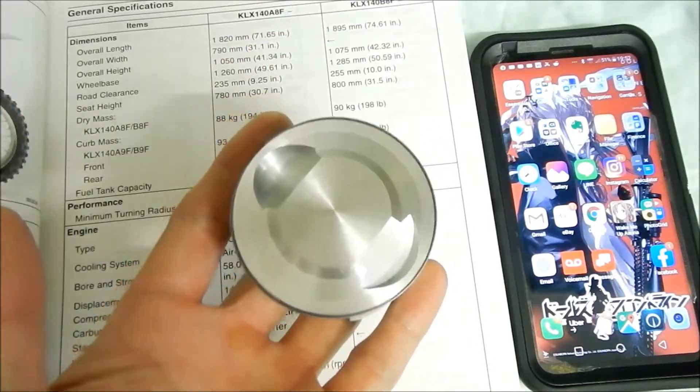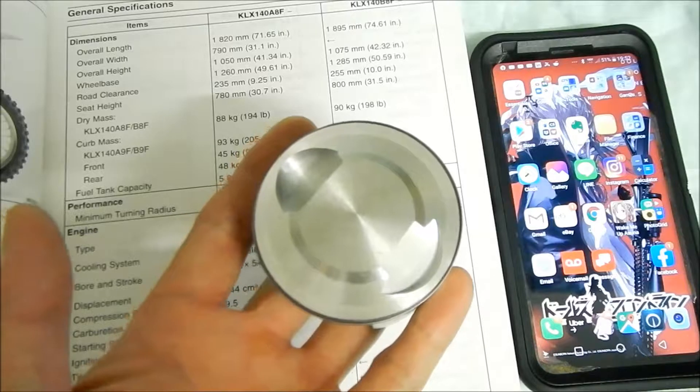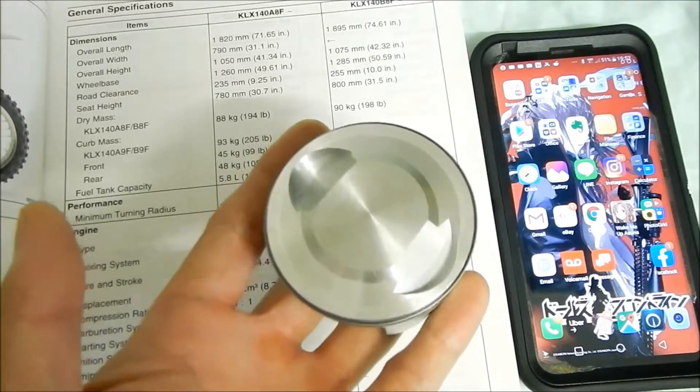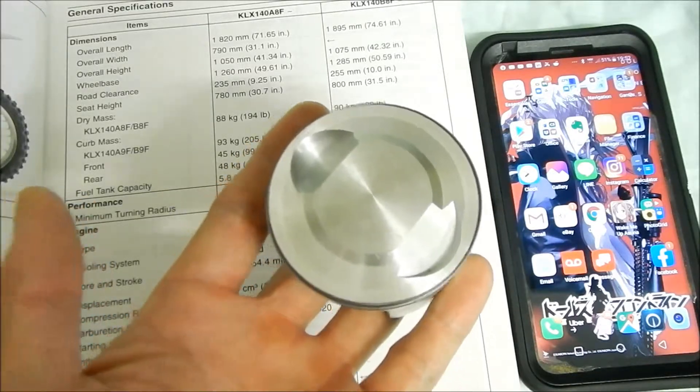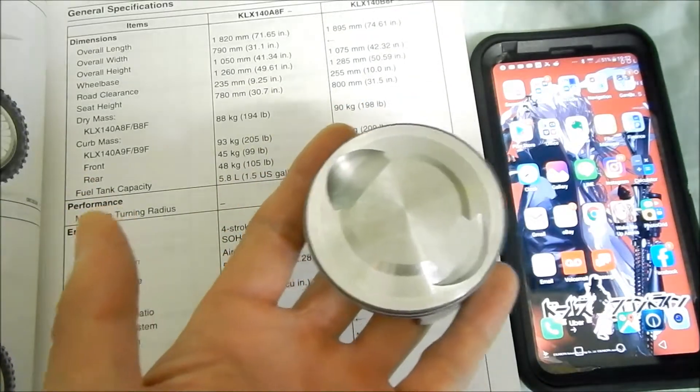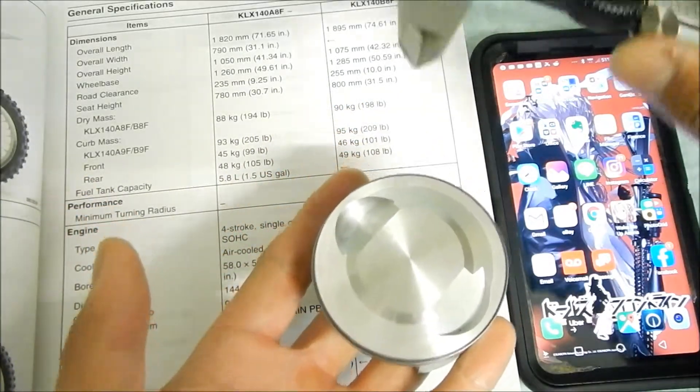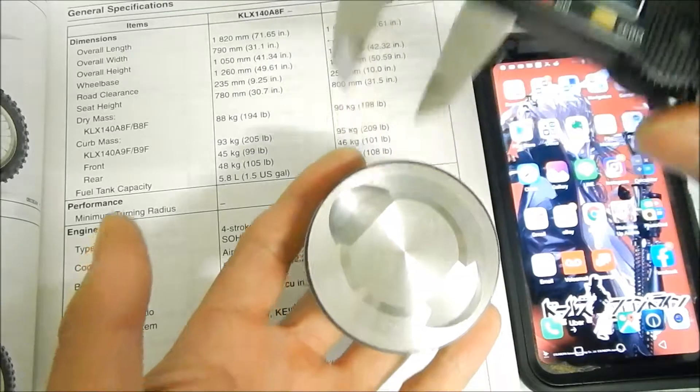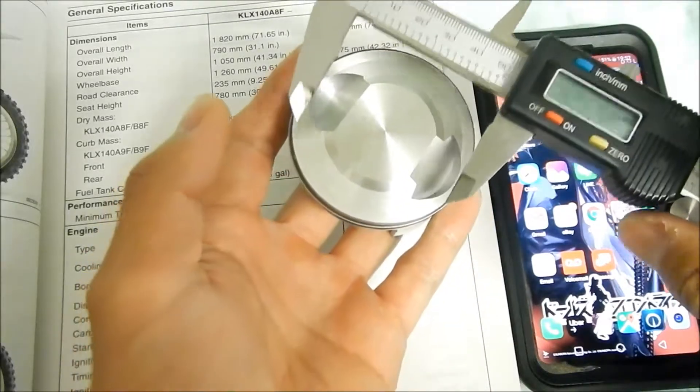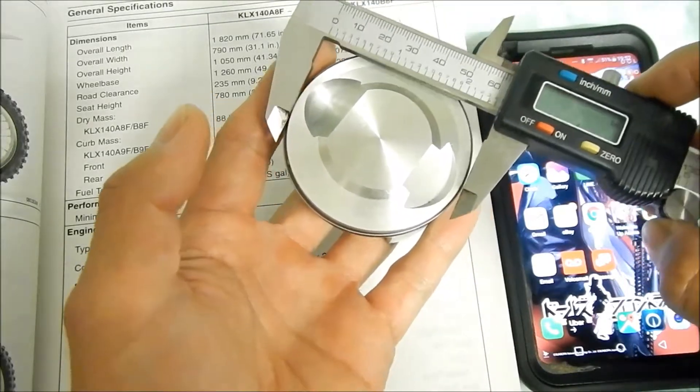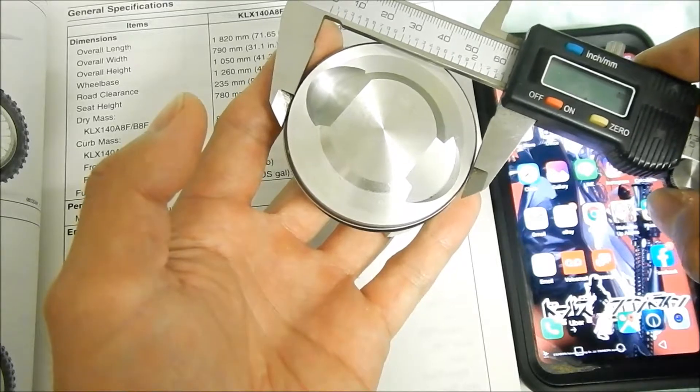We can maybe round up one millimeter, but anyway we got a caliper here. We're going to measure the diameter of the piston real quick, and we're going to calculate the displacement.